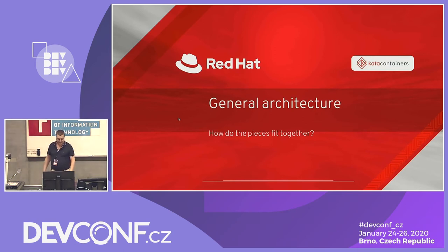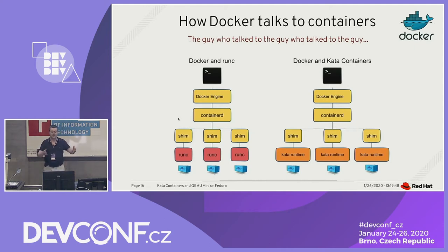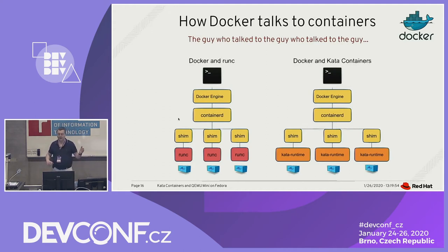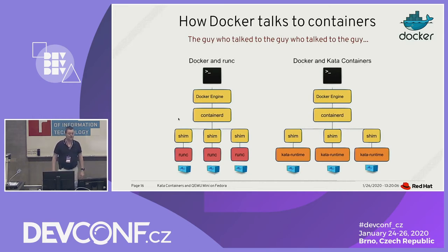General architecture of Kata Containers — there was a great talk yesterday, so this will be a bit of a repeat. Basically Docker talks to containerd through a number of layers — it's a story of the guy who talked to the guy who talked to the guy who finally talks to your container. The part really replaced is at the bottom: the runc red box gets replaced with the Kata runtime orange box.